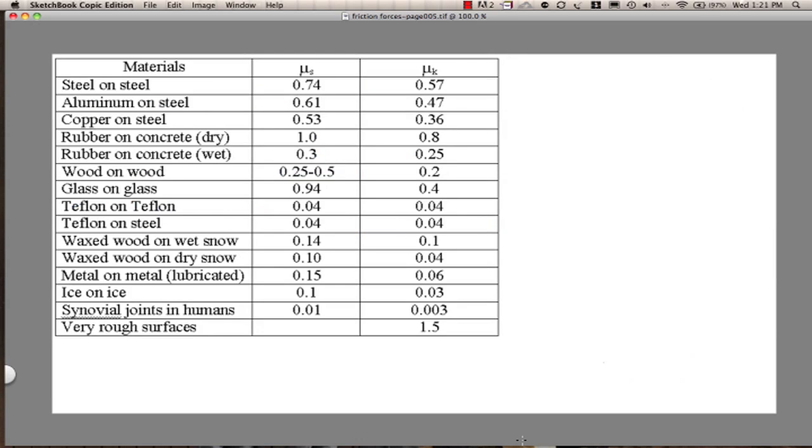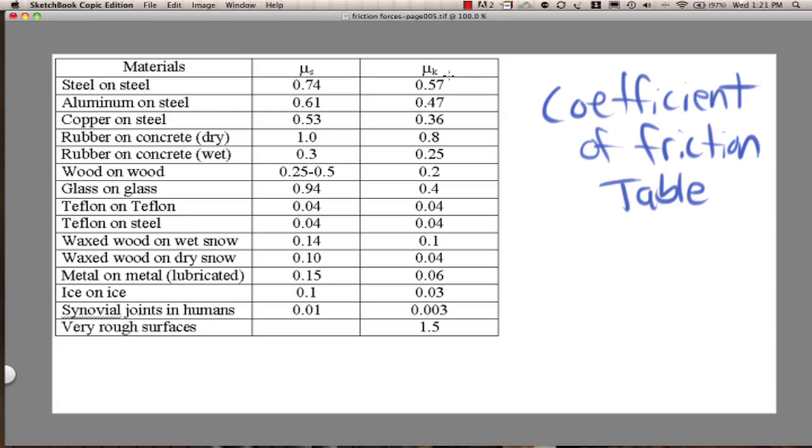As promised, here is a coefficient of friction table from a physics journal. Mu sub S means the static coefficient of static friction. Mu sub K - that K is often used for kinetic friction, kinetic meaning motion. We'll get into kinetic energy, the energy of motion, later in the physics course. So this table here is the rolling, and this table here is the static. Let's look at some of these - things you might use on a regular basis.